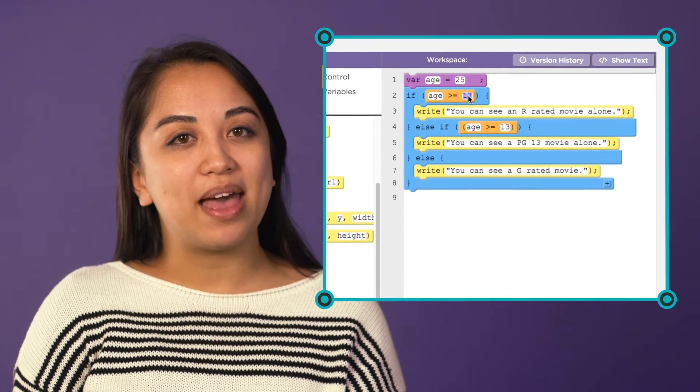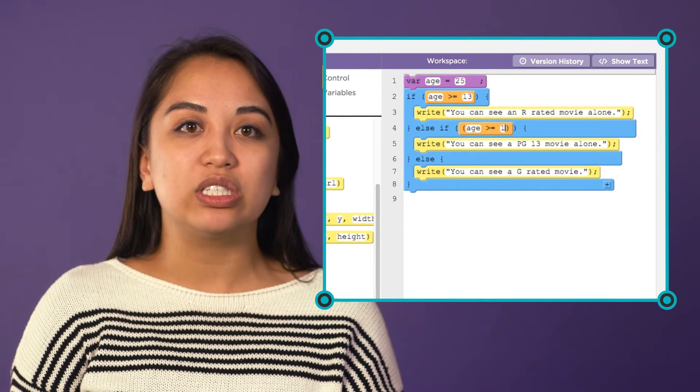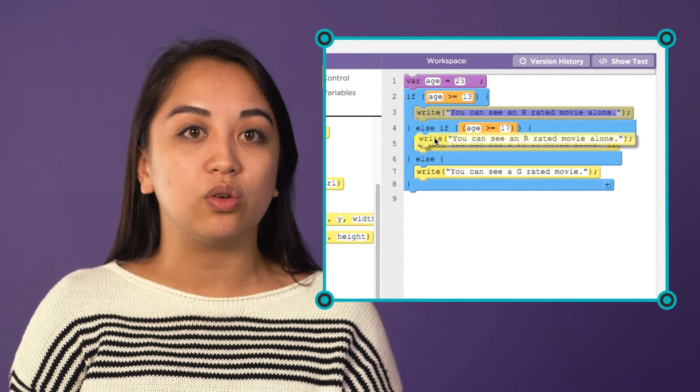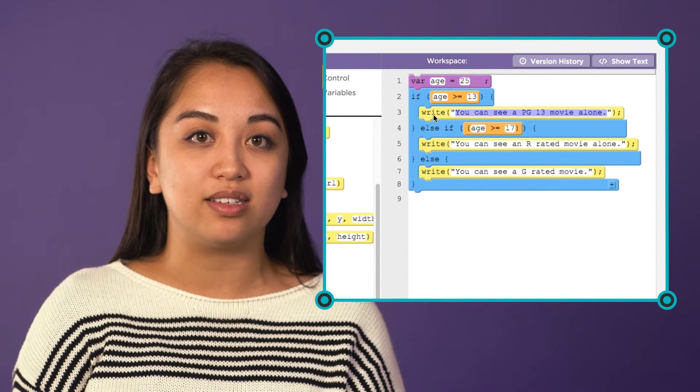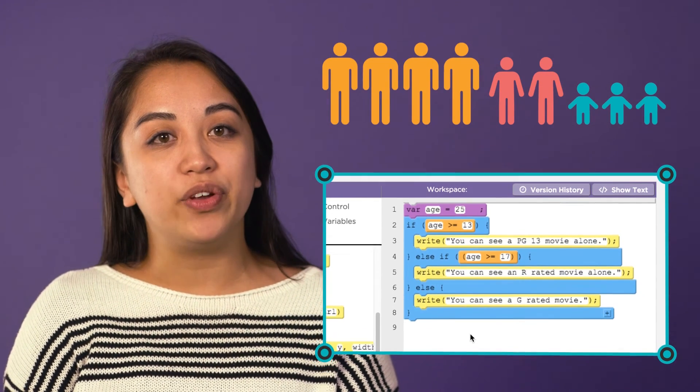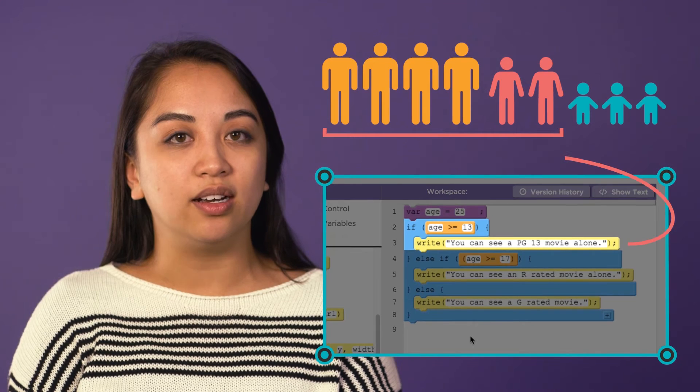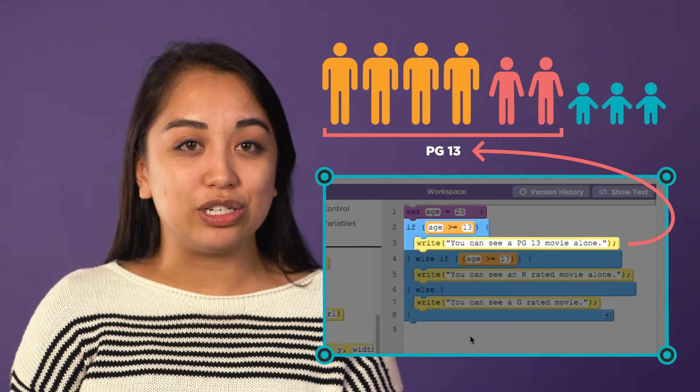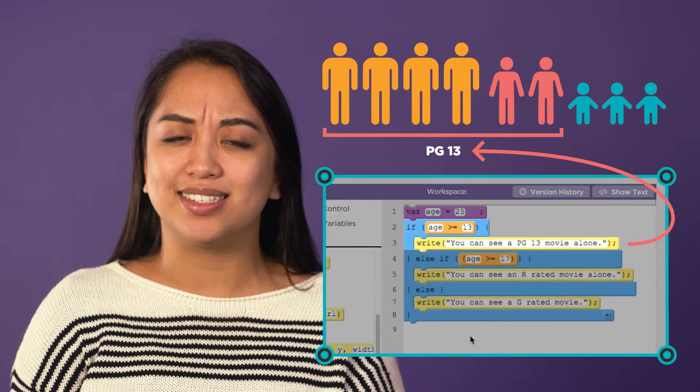In our example, imagine we had switched the code so that the first condition checked if the user was old enough to see PG-13 movies. Like this. This would mean that everyone who is 13 or older would be told they can only see PG-13 movies, even the adults.